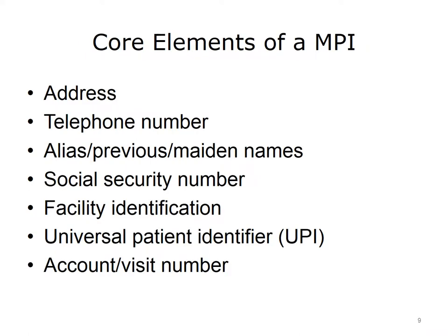AHIMA 2010-B defined the core elements of an MPI as follows. Internal patient identification: the primary identifier used by the facility to identify the patient at admission, for example the medical record number. Person name: the legal name of the patient or person, including surname, given name, middle name or initial, suffixes such as Junior or Fourth, and prefixes such as Father or Doctor.